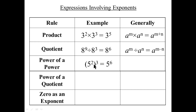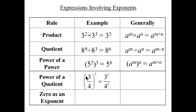Power of a power: when you put an exponent on a power, multiply the exponents — two times three is six, so a to the m to the n is a to the m times n. Power of a quotient: if you take a fraction and raise it to an exponent, the exponent applies to both top and bottom. For example, three-fourths cubed becomes three cubed over four cubed. In general, x over y to the m is x to the m over y to the m.